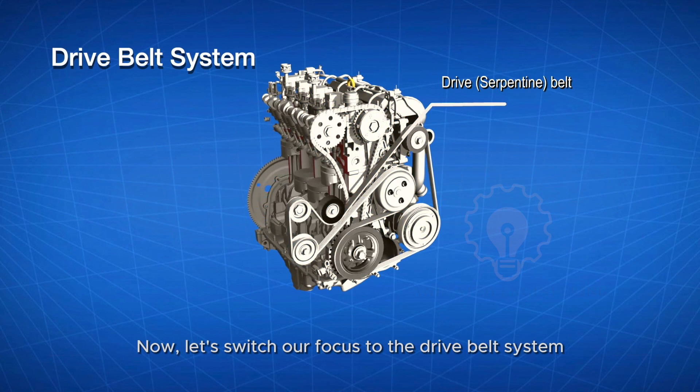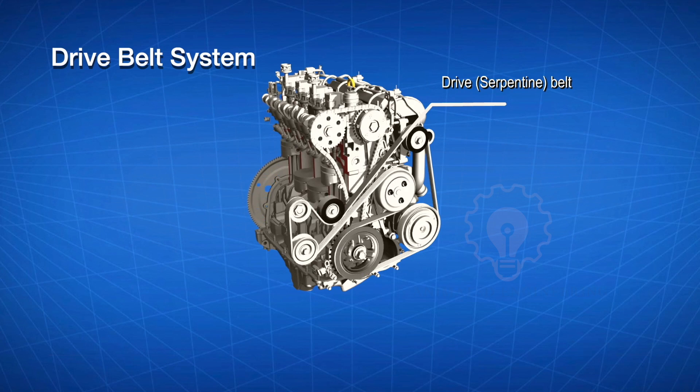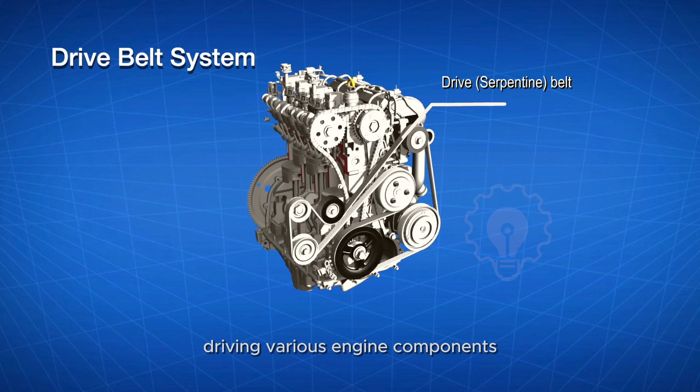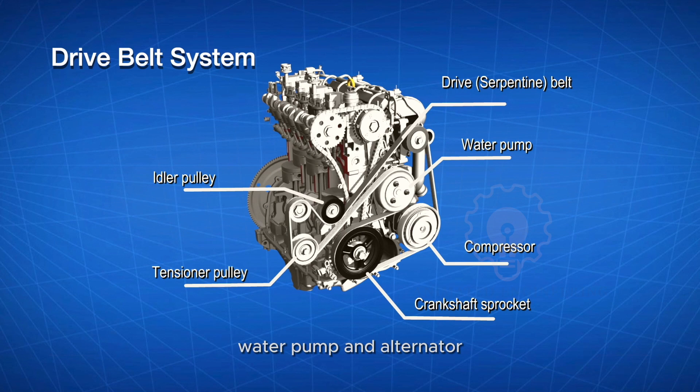Now, let's switch our focus to the drive belt system, also known as the serpentine belt. This belt is a multi-tasker, driving various engine components such as the air conditioning compressor, water pump and alternator. It ensures that these components work in sync to support your vehicle's electrical and cooling systems.